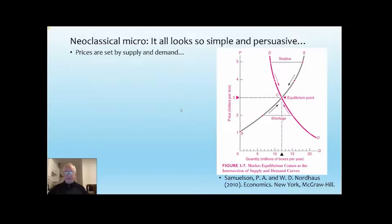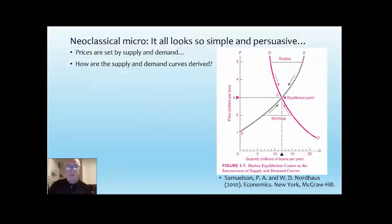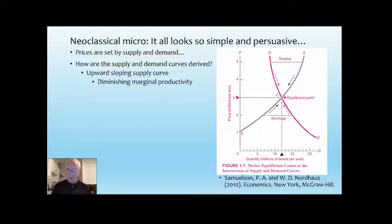This is taken from Samuelson and Nordhaus's textbook. The drawing is great, but how do you derive them? How do you say what causes the supply curve and what causes the demand curve? The supply curve is seen as upward sloping — suppliers demand a higher price if they're going to supply a higher quantity. The logic is that they face diminishing marginal productivity, presented as a law in so many textbooks. And they have a downward sloping demand curve, governed by another law: diminishing marginal utility.